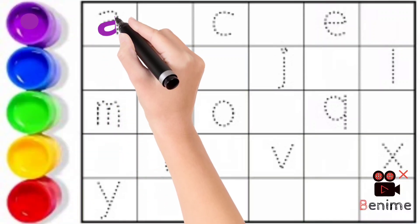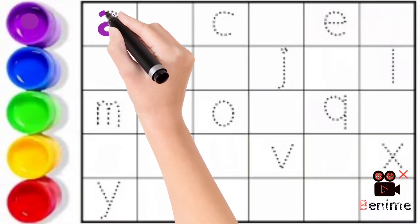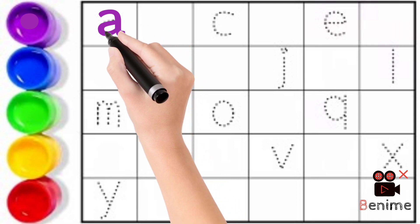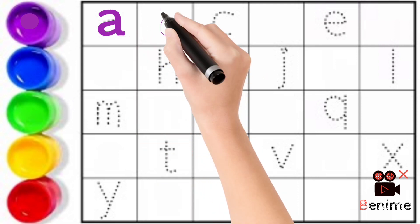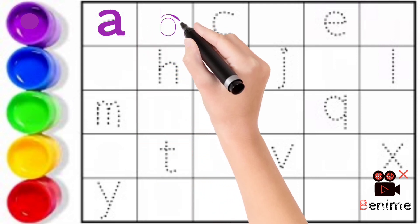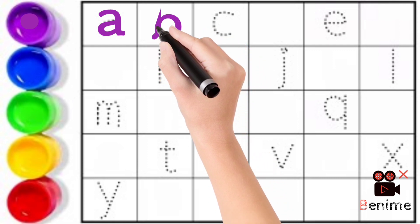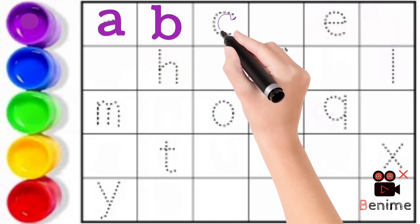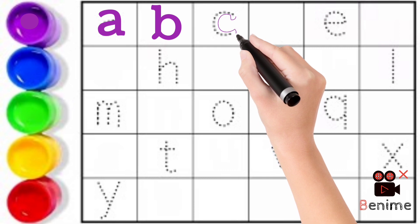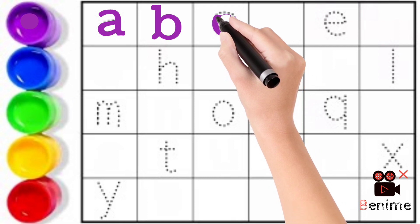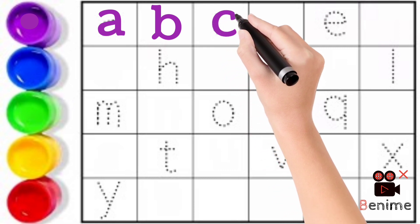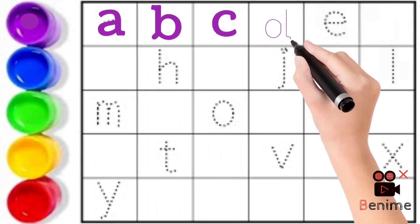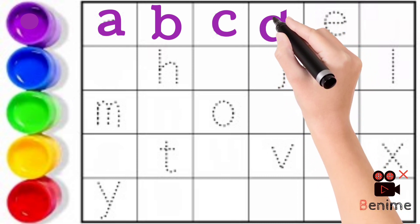A. A for Aunt. B. B for Boy. C. C for Cow. D. D for Doll.